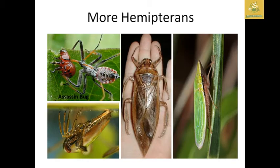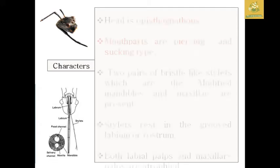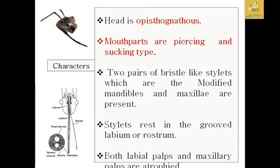Some of the Hemiptera bugs are the assassin bug, giant water bug, leaf hopper, and water boatman. While seeing the characteristics of Hemiptera insects, the head is known as opisthognathous type and the mouthparts are piercing and sucking type.